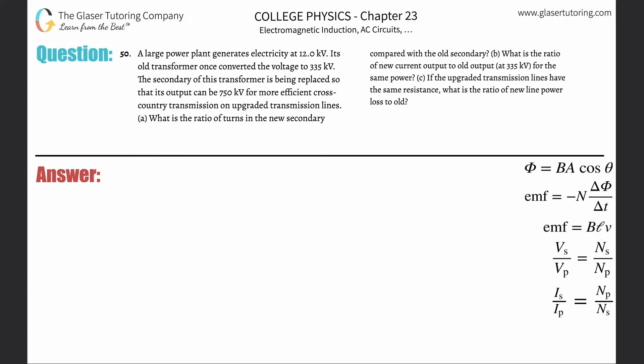Number 50. A large power plant generates electricity at 12 kilovolts. Its old transformer once converted the voltage to 335 kilovolts. The secondary of this transformer is being replaced so its output can be 750 kilovolts for more efficient cross-country transmission. Letter A: what is the ratio of the number of turns in the new secondary compared to the old?